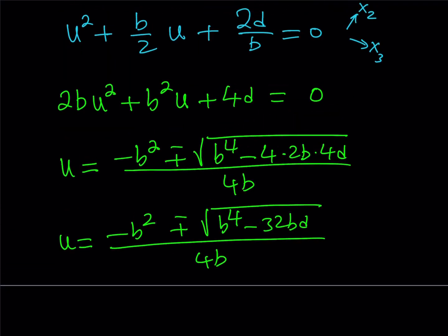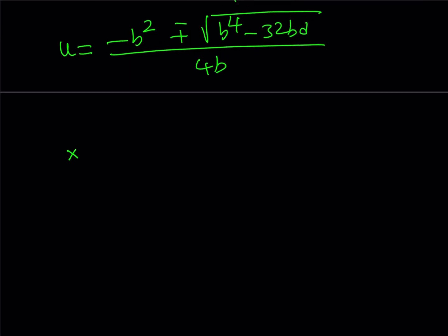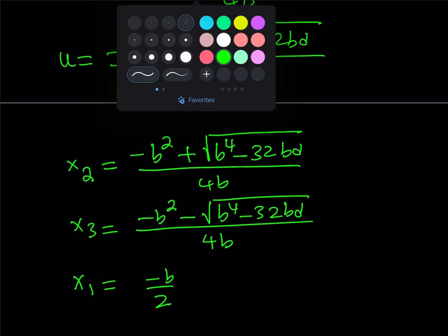So u represents x2 and x3, so I can write them separately. Let's say x2 is the positive one: negative b squared plus the square root of b to the fourth minus 32bd, all over 4b. And then x3 is the other one with the minus sign: negative b squared minus the square root of b to the fourth minus 32bd, all over 4b. And remember, we found x1 earlier, and it was negative b over 2. This gives us all the solutions.